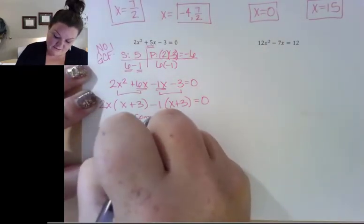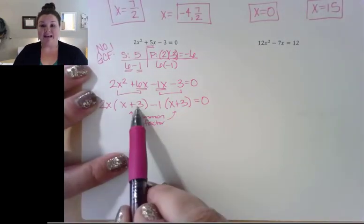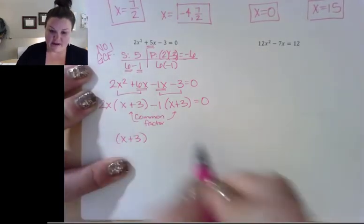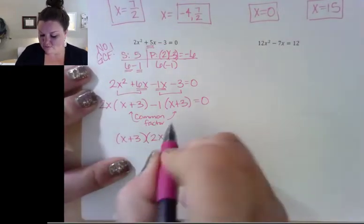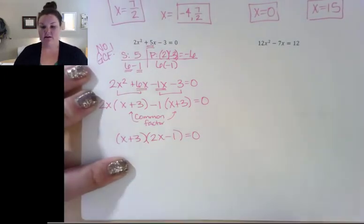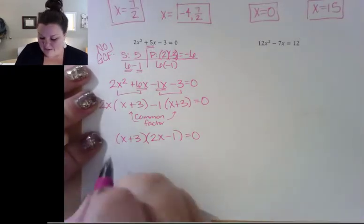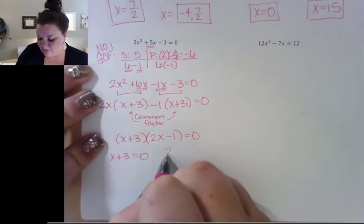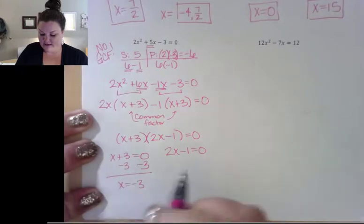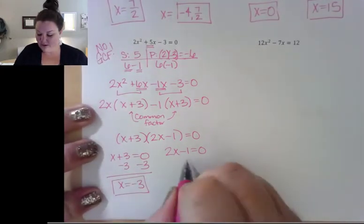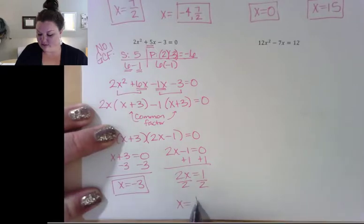Now we see we have a common factor within our leftovers. So x plus 3 is my common factor. What's left once I take that common factor out is 2x from the first term and negative 1 from the second term. Now I'm not done — that was a bit of work to get it factored, but now that it's factored, I'm going to set each factor equal to 0. The first one: subtract 3, giving x equals negative 3. The second: move the 1 over and divide off the 2, giving x equals 1 half.